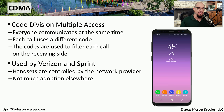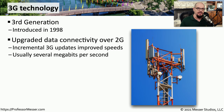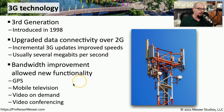In 1998, we introduced the third generation of mobile networks called 3G. This allowed us to have additional options for data connectivity that worked much better than the older 2G networks. It improved speeds and allowed us to send data and communicate via voice at the same time over the same network. This allowed many different options for our mobile networks, including GPS connectivity, mobile television, and other video services.